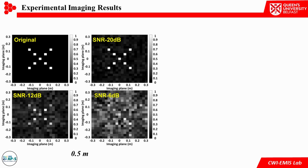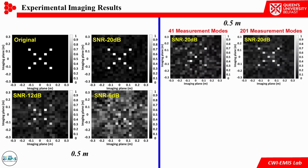Higher quality reconstructions can be achieved with an increased SNR level. Then, we demonstrate the advantage of reducing the frequency interval. Comparing 41 and 201 measurement modes, we find that more measurement modes produce better images under the same conditions.